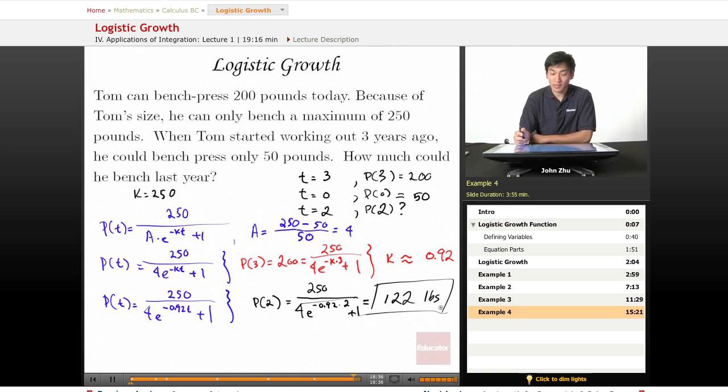So let's see if our answer makes sense. He's benching 200 today. He started with 50 three years ago and last year he could only bench 122. So his growth model was somewhat fast. It started off exponential and it was still at a very fast rate of growth near the end because it hopped up 80 pounds in one year.